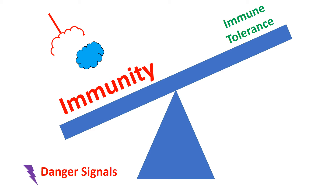Importantly, throughout the human lifespan the body can change its response to an antigen, from tolerance to immunity, or from immunity to tolerance. Modern medicine can manipulate these forces.